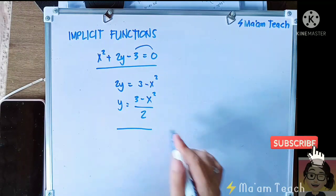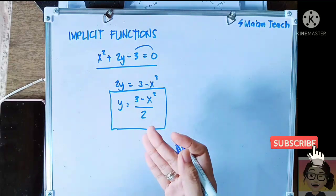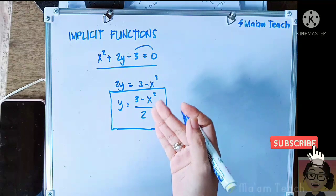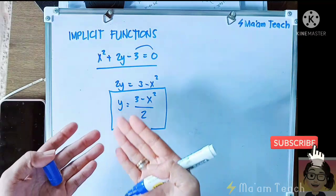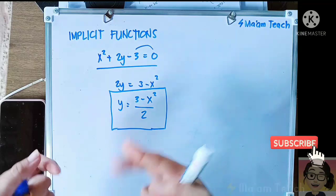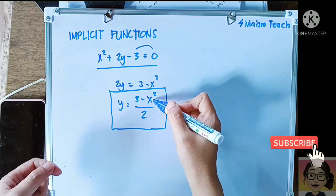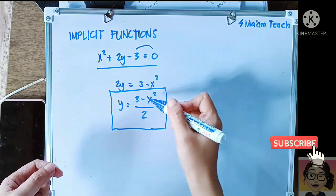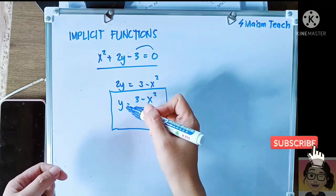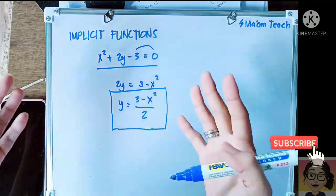You'll see that it is clearly stated that y is equal to 3 minus x squared all over 2. Which means that if you get the square of x and then you subtract it from 3 and then divide it by 2, you'll get the y, right?